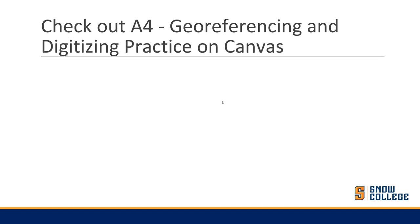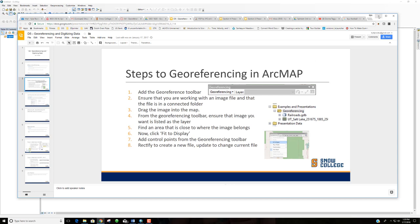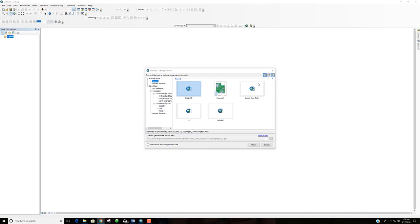Now we're going to jump over to ArcMap and practice georeferencing together. As a reminder, the steps are: get the toolbar, make sure you have an image file, bring it in from the connected folder, ensure it's listed as the layer in georeferencing, find the area where the image belongs, do fit to display, add control points, and finally rectify to create a new file or update to change the current file.